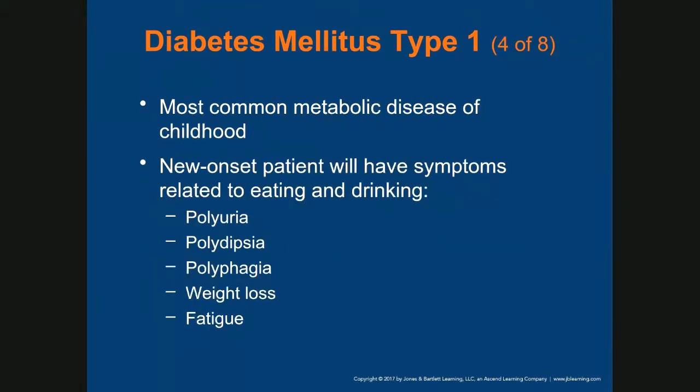Diabetes mellitus is the most common metabolic disease of the child. A new onset patient will have signs related to eating and drinking. You will see the classic three P's.